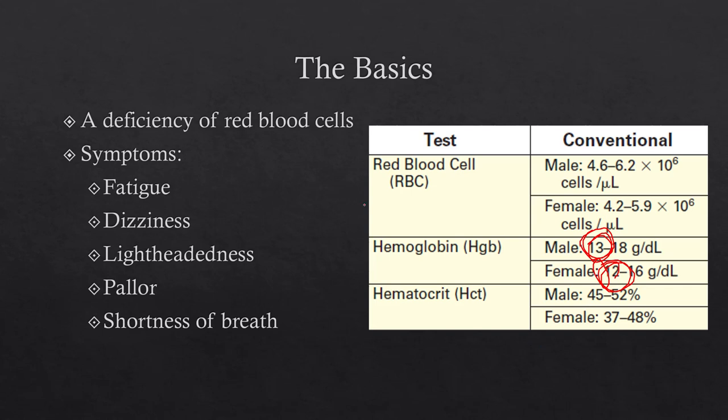When you have a patient with anemia, they're usually going to complain mostly of fatigue. Sometimes you'll get dizziness, lightheadedness, pallor — because if they have less blood, they're going to look paler. Shortness of breath can happen if it gets to that point. If they're anemic, they have less oxygen-carrying capabilities, so these are kind of the same symptoms you'd see with hypoxia.